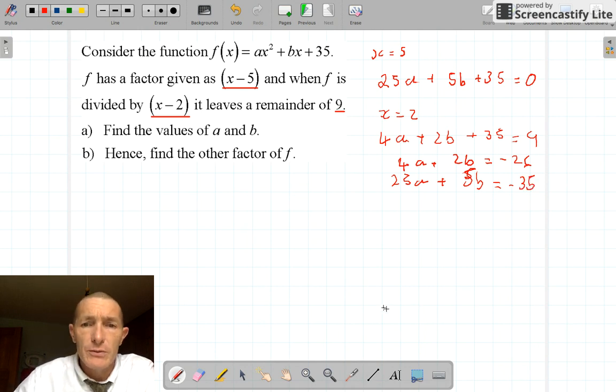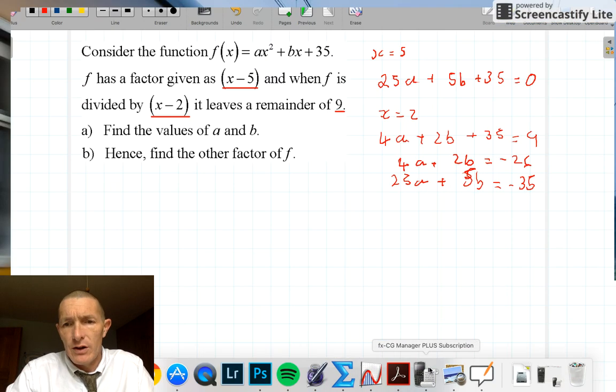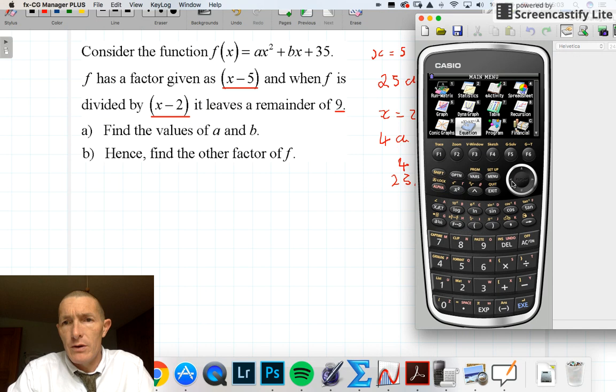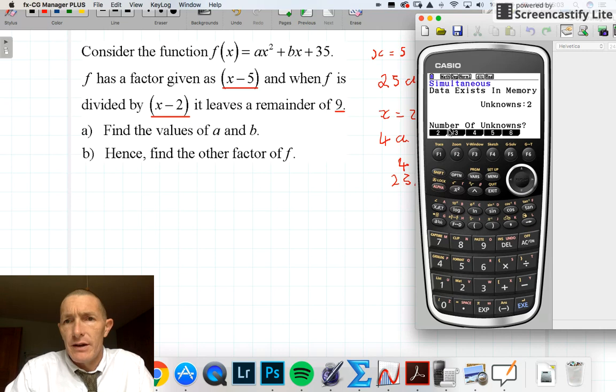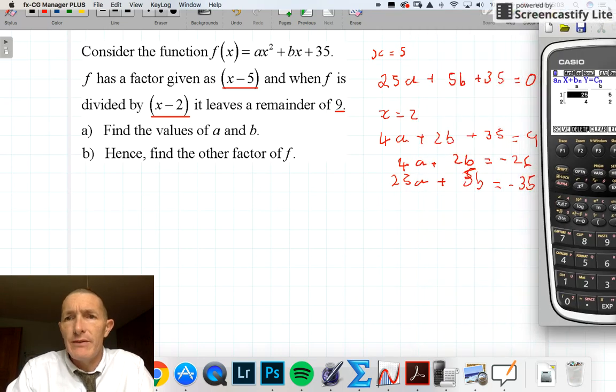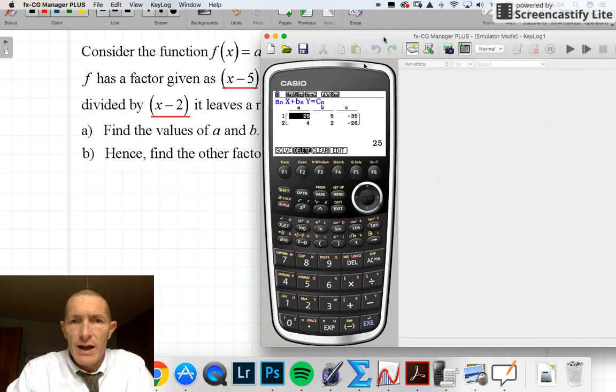Now what I'm going to do with that is, rather than try and solve this using simultaneous equations, I can just get my equation solver on my calculator. So I go into equation solver and put in 2 unknowns, and I just type that in without even simplifying. So I've got 25, 5, minus 35, 4, 2, and minus 26, and we'll just solve it.